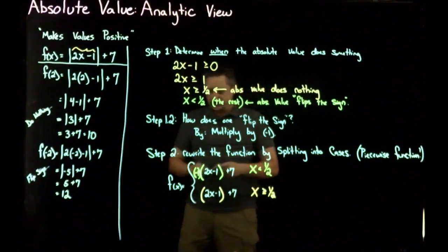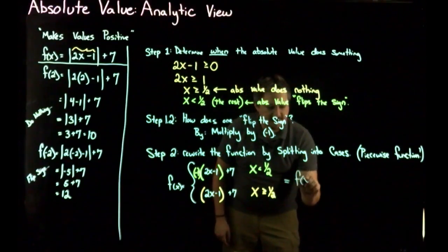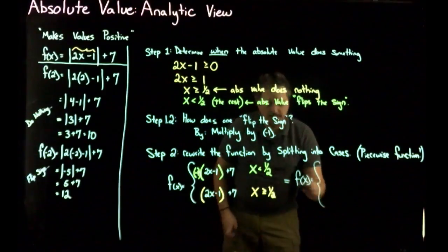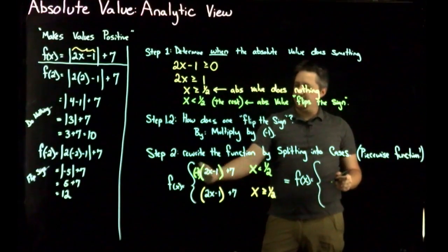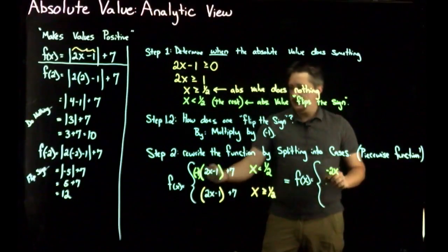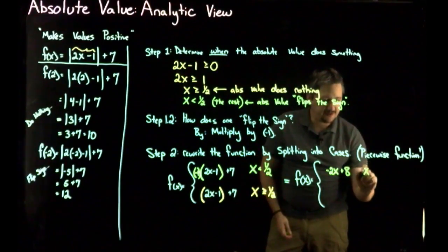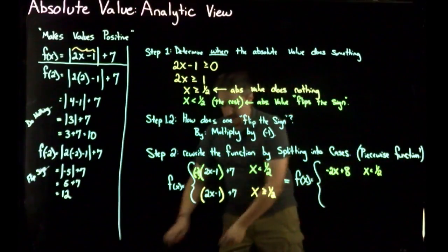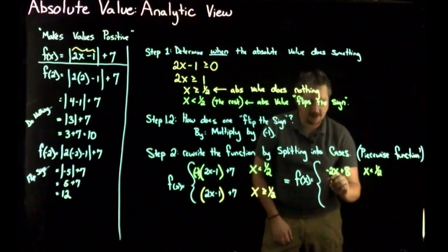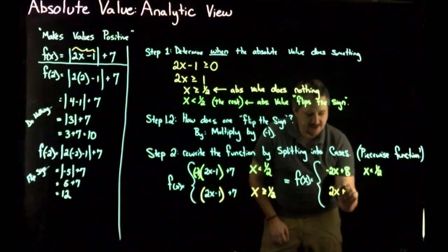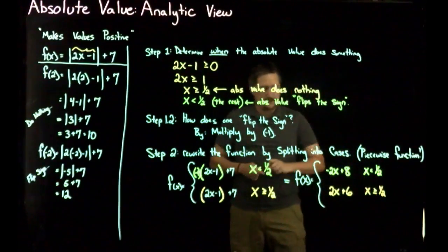Finally, I simplify by cleaning up the algebra. For x < 1/2: distributing the negative gives minus 2x plus 1 plus 7, which is minus 2x plus 8. For x ≥ 1/2: 2x minus 1 plus 7 gives 2x plus 6. So f(x) equals minus 2x plus 8 when x < 1/2, and 2x plus 6 when x ≥ 1/2.